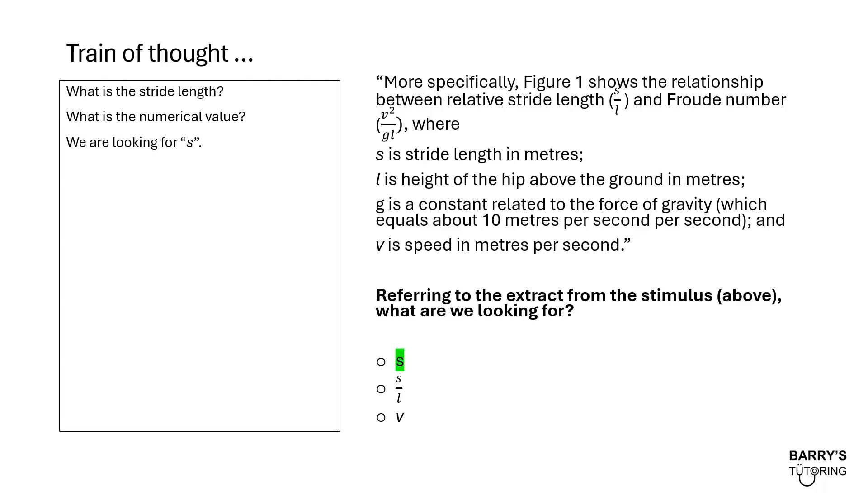Given that we're looking for the stride length, S is the symbol we're looking for. In the extract above, S is stride length in meters. So the units are also useful in confirming for us that S is the thing that we're interested in. We'll keep on going.